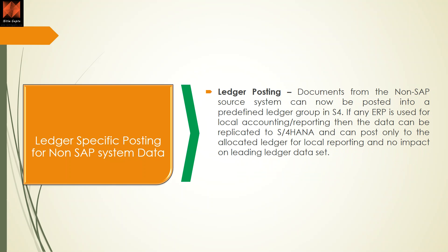The last change is ledger-specific posting from non-SAP systems. Previously, documents from non-SAP systems were supposed to come into every ledger available in S/4HANA by company code. Now, in the SLT transformation layer, you can define which particular document should go to which ledger. The benefit is that you can post only to the allocated ledger for local reporting purposes, with no impact on the leading ledger or other ledger data. You will need to check the updated notes related to SLT where the staging tables are provided by SAP.